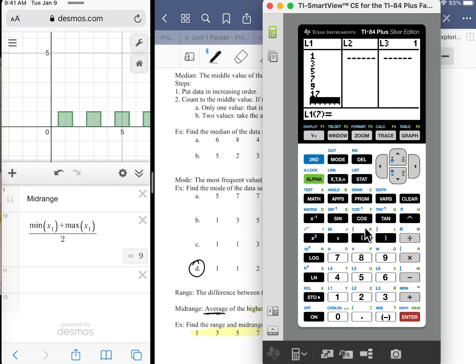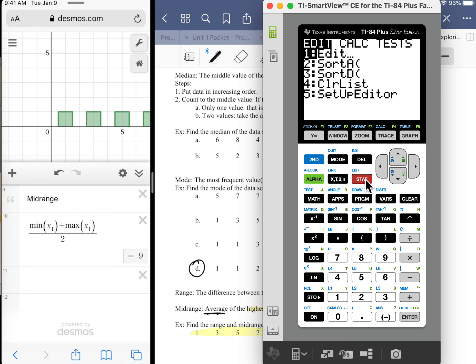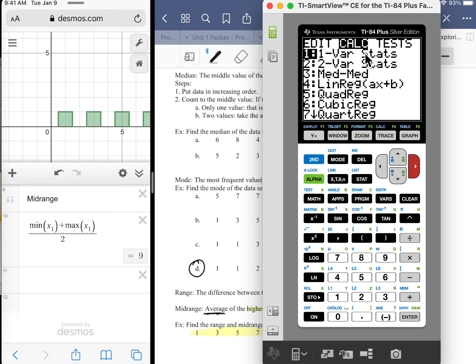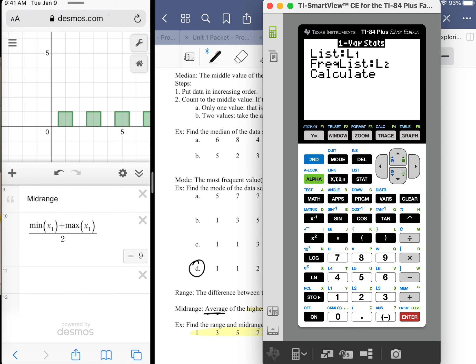So I have my data locked in. Now I want the calculator to do all the work for me. The benefit of the TI, so second mode to quit out of any menu that you're in, is that there's a lot of applications that will do everything for you in one shot. Calculator still won't give you the mode or the mid-range. You'll have to figure those out on your own. But it will give us the mean and the median, which are usually the more computation-heavy concepts anyway. So stat, calc, option one, one variable statistics.